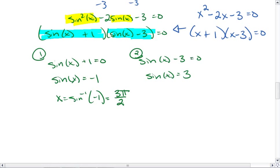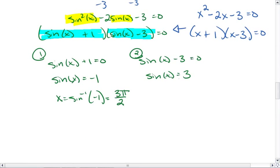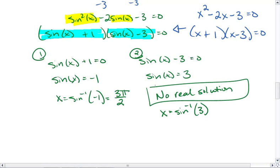For sin(x) = 3, what we should realize is we're never more than one radius length away from the center of our circle. So we're never three radius lengths away. Thus, anything that's greater than 1 or less than negative 1, there's no real solution. And if you were to plug this into your calculator, if you were trying to find sin⁻¹(3), your calculator is going to return an error. That's because there's no real solution for part 2.